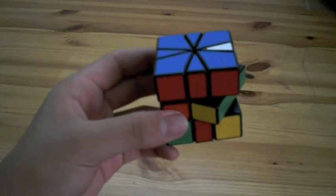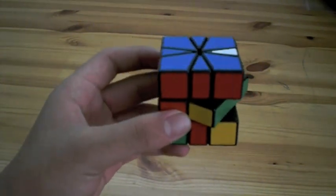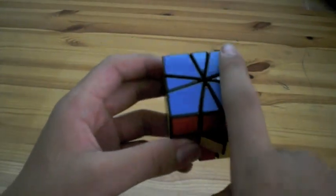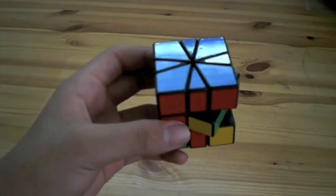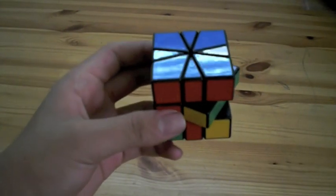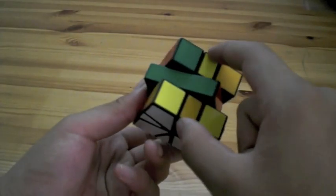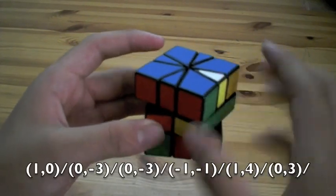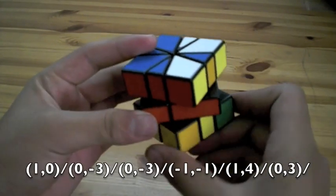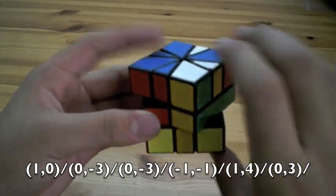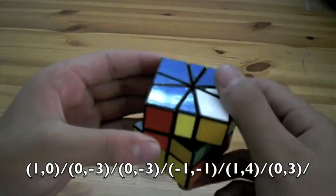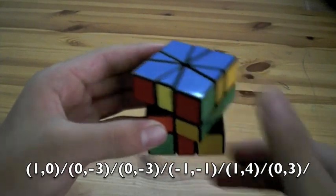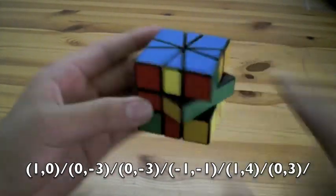The next step of solving the Square-1 is to get all of the edges into the correct layers. So after this step, this face will be a solid color and this face will be a solid color. The first and only algorithm that you need to solve this step switches these two edges with each other. So you want to hold the puzzle like this and do the algorithm. And that should switch these two pieces.